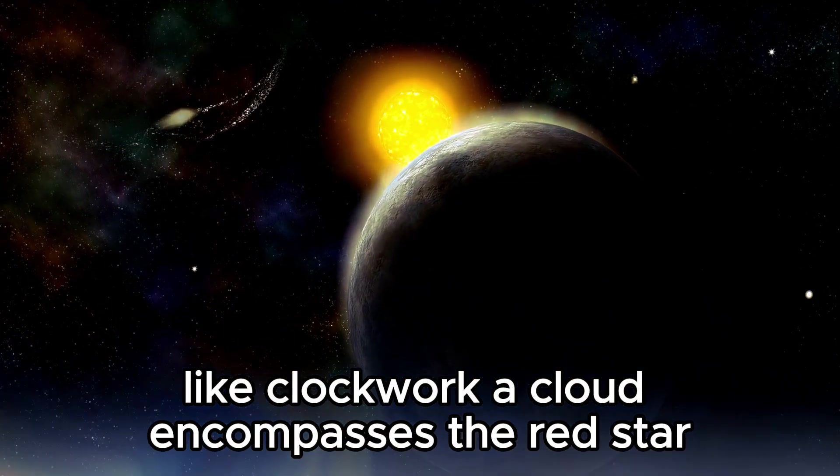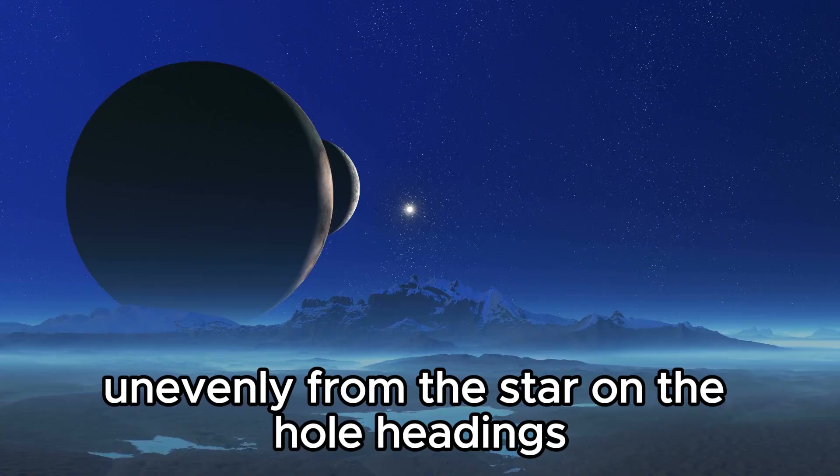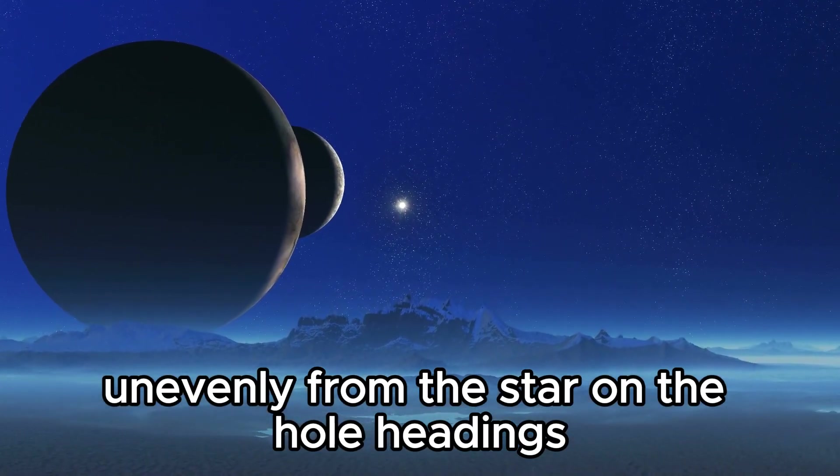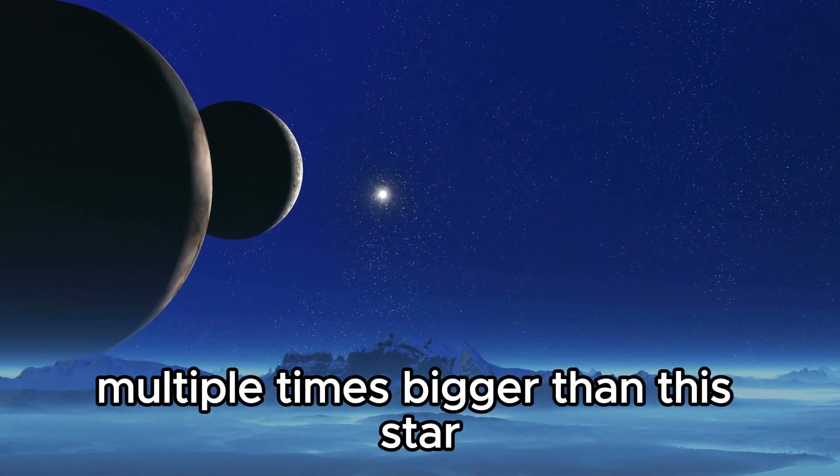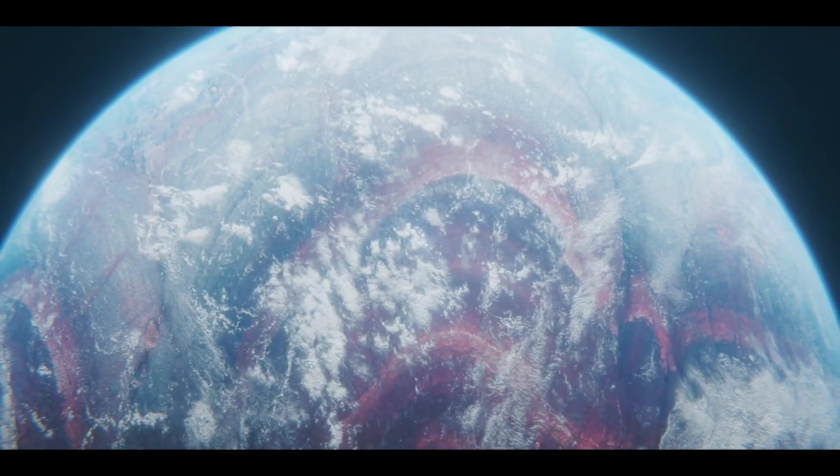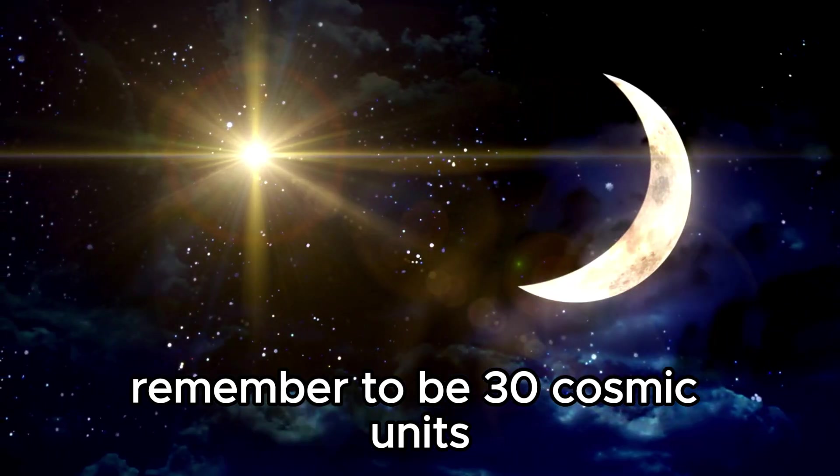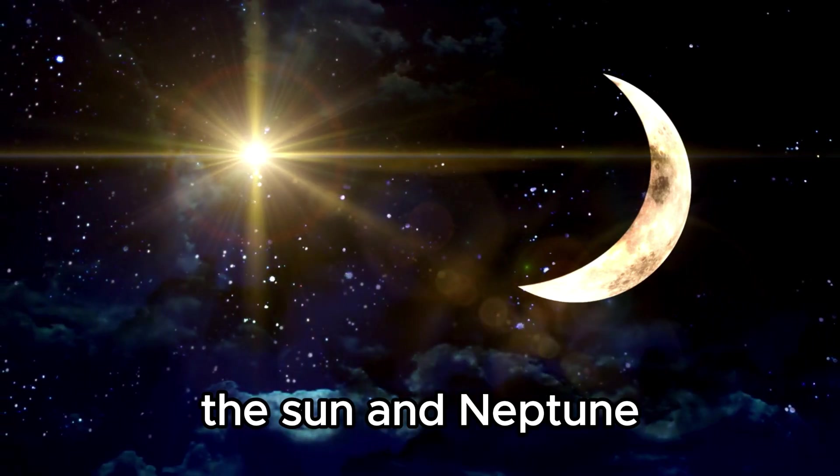A cloud encompasses the red star since this material is being shot out unevenly from the star in all headings. A cloud of material multiple times bigger than this star encompasses Betelgeuse, and the size of this cloud is moreover remembered to be 30 astronomical units, or multiple times the distance between the Sun and Neptune, the farthest planet in the solar system.